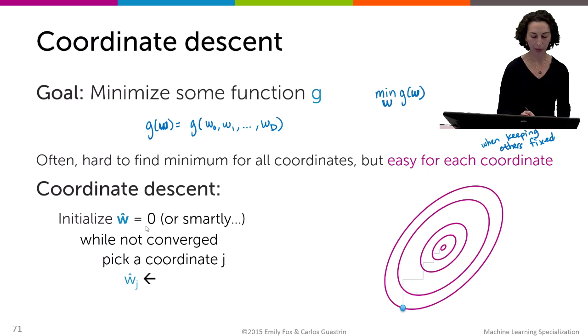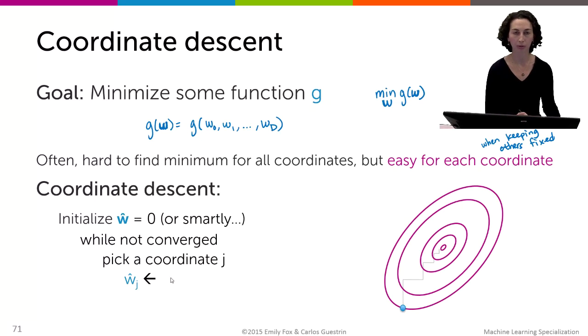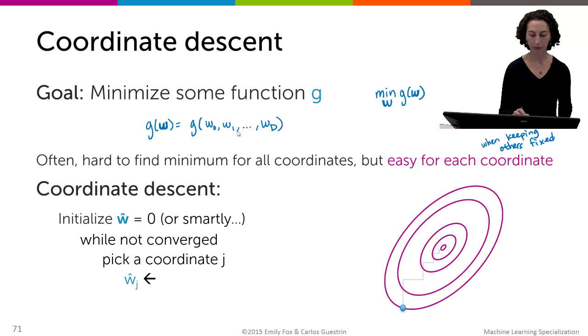And then while the algorithm's not converged, we're just going to pick a coordinate out of 0, 1, all the way to D. And we're going to set w hat j equal to the w that minimizes, I'm going to search over all possible values of omega.